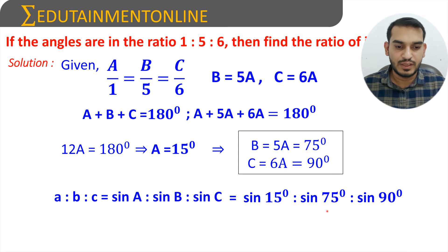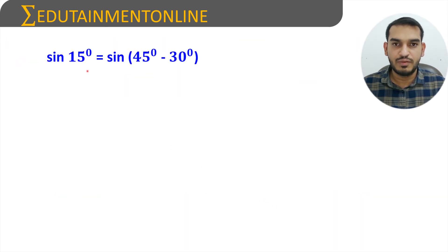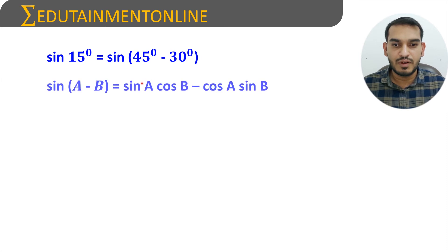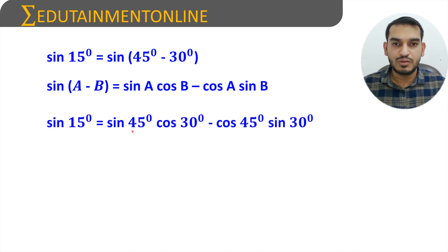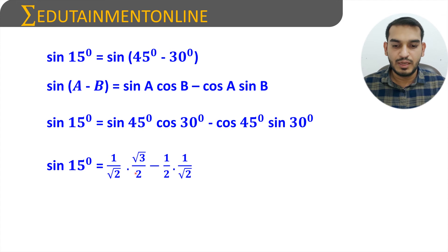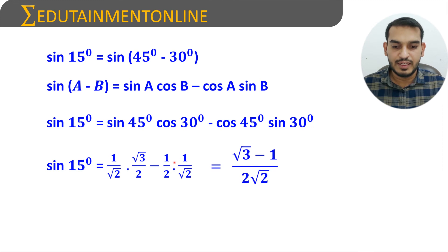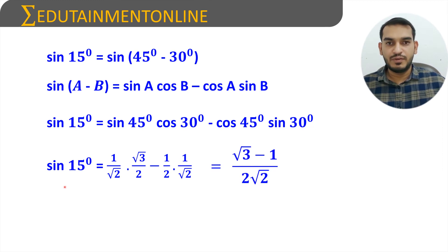To find sin 15°, we write 15° = 45° − 30°, using the formula sin(A − B) = sin A cos B − cos A sin B. Substituting A = 45° and B = 30°: sin 15° = sin 45° cos 30° − cos 45° sin 30° = (1/√2)(√3/2) − (1/√2)(1/2). Since the denominator is the same, sin 15° = (√3 − 1) / (2√2).